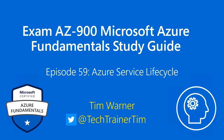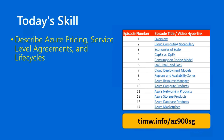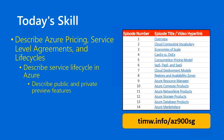Hello there and welcome to Exam AZ-900, Microsoft Azure Fundamental Study Guide. This is episode 59 entitled Azure Service Lifecycle. My name is Tim Warner. Our AZ-900 skill today starts with the functional group Describe Azure Pricing, Service Level Agreements and Lifecycles, goes through the objective Describe Service Lifecycle in Azure, and our specific skills are Describe Public and Private Preview Features, and Describe the Term General Availability, or GA. Go to timw.info/AZ-900SG for the interactive study guide.